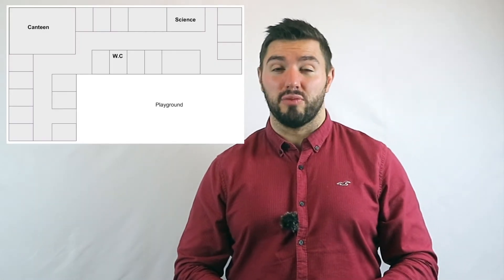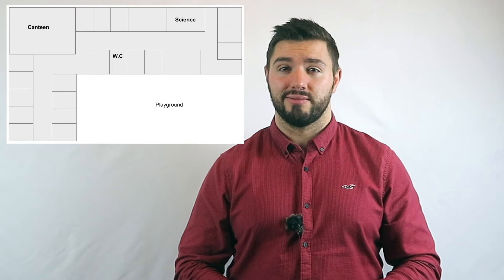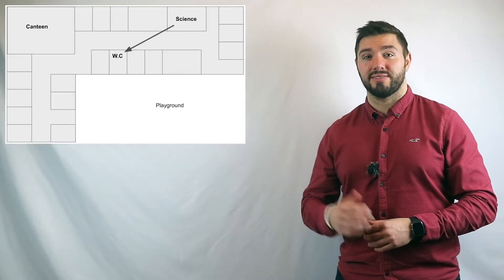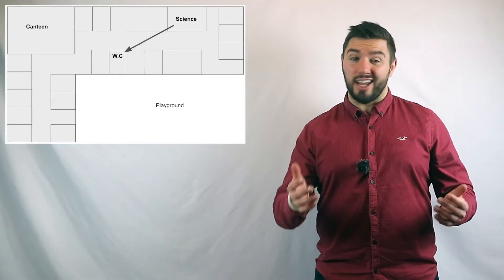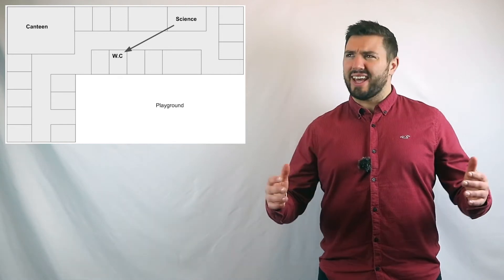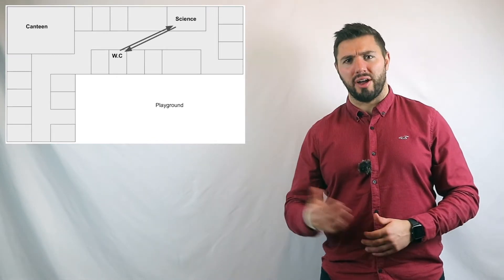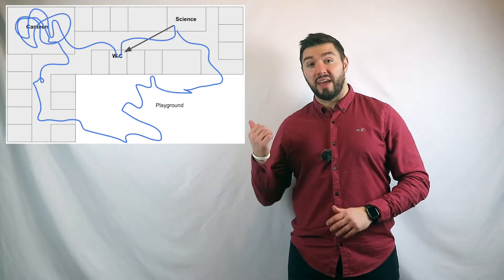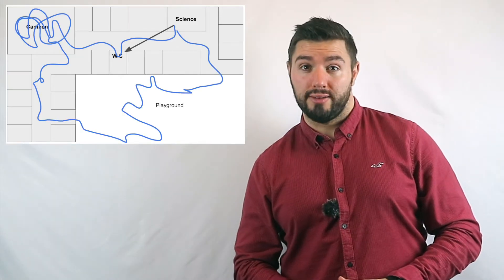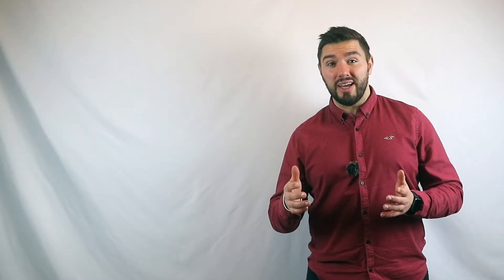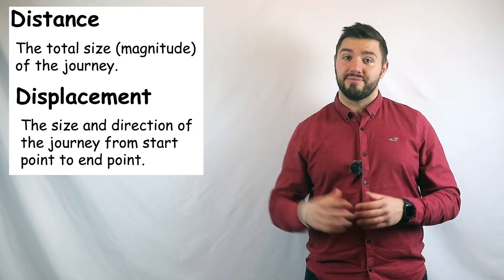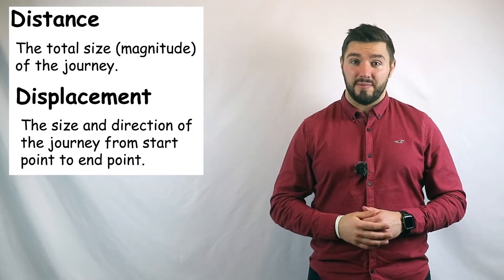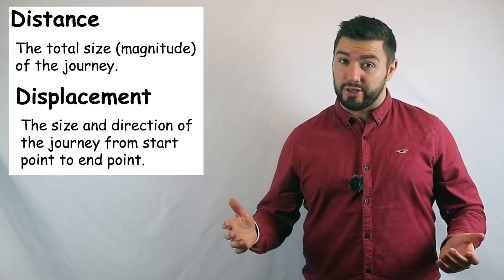Imagine you're in a classroom and a student asks to go to the toilet. The displacement from the classroom to the toilet might look like this — so you would think it's a pretty straightforward trip. Yet it seems to take forever for them to go and come back, so let's have a look at the distance they travel. Yeah, that makes a lot more sense — you know who you are. Displacement only tells you from A to B; it doesn't tell you the distance you've traveled between A and B, but it does give you an overall direction.